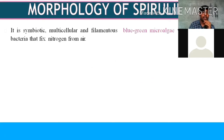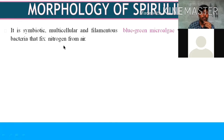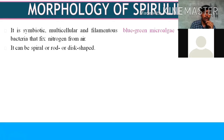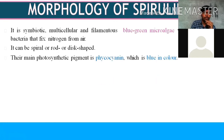Spirulina is symbiotic in nature, multicellular, and filamentous — a blue-green microalgae with symbiotic bacteria that fix nitrogen. Being multicellular means it is a eukaryotic organism. They can be spiral, rod, or disc-shaped; the spiral shape is what gives spirulina its name. The main photosynthetic pigment present in spirulina is phycocyanin — the most important pigment used in many industrial products, purified from spirulina.